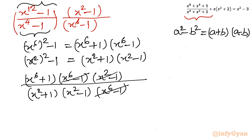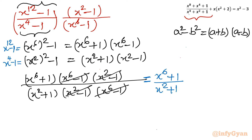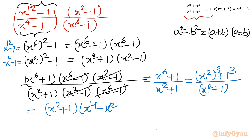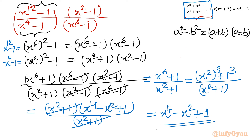Now we cancel the common terms (x⁶ - 1) and (x² - 1). Then I apply the a³ + b³ identity to the numerator: x⁶ + 1 = (x²)³ + 1³ = (x² + 1)(x⁴ - x² + 1). The denominator is x² + 1, which cancels, giving the rational expression simplifies to x⁴ - x² + 1.